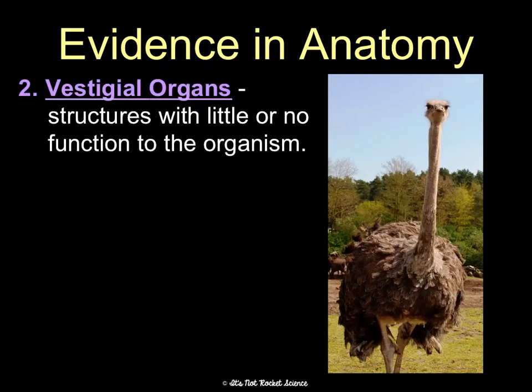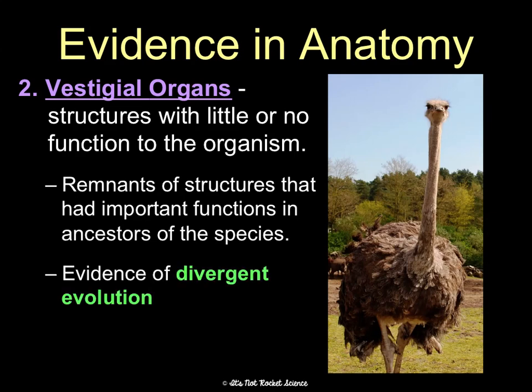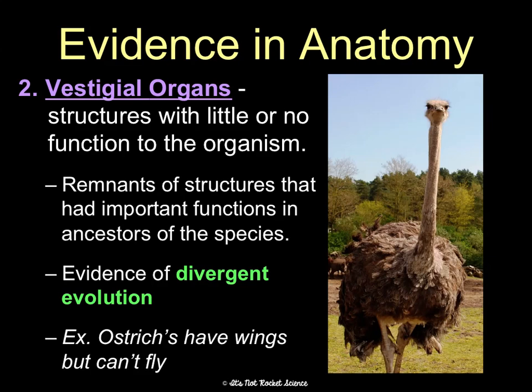Another structure that is evidence for evolution in anatomy is vestigial organs or vestigial structures. These are structures with little or no function to an organism, which evolutionarily speaking makes no sense. Scientists believe they're remnants of structures that once had important functions in ancestors of the species, but these organisms have divergently evolved and no longer need them. For example, ostriches have wings but they can't fly — so wings are a vestigial structure in ostriches.